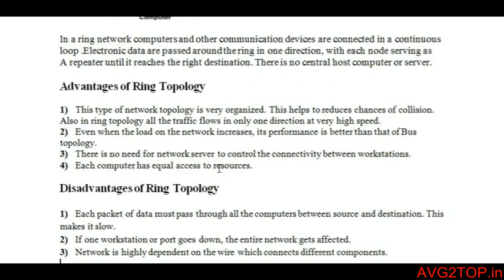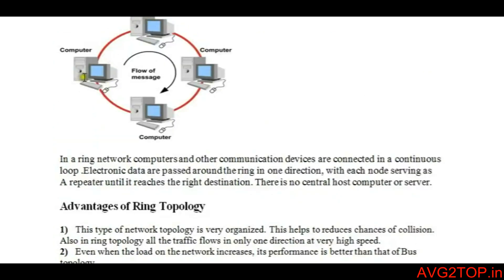Advantages of ring topology: it reduces collisions because data is transferred from source to destination in one direction. Even when the network load increases, performance is better than bus topology because data flows faster. There is no need for a server to control all the computers, and each computer has access to resources.